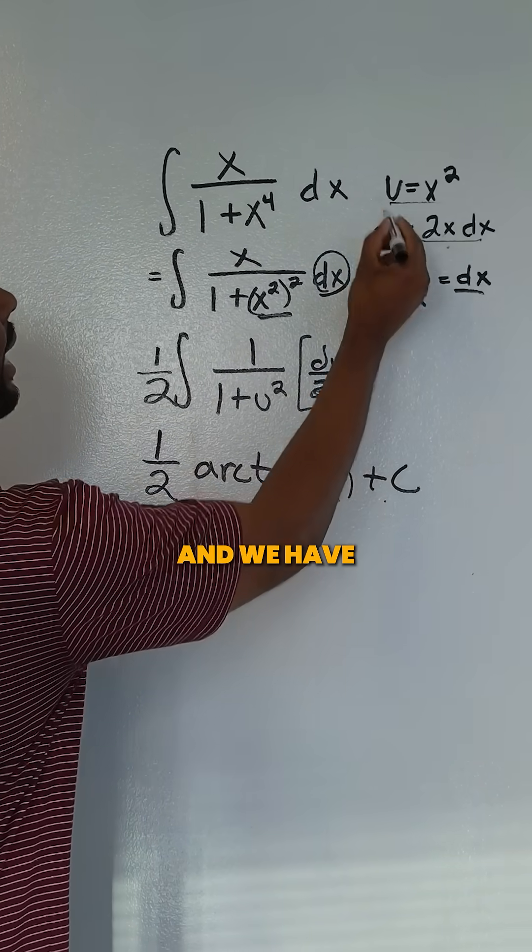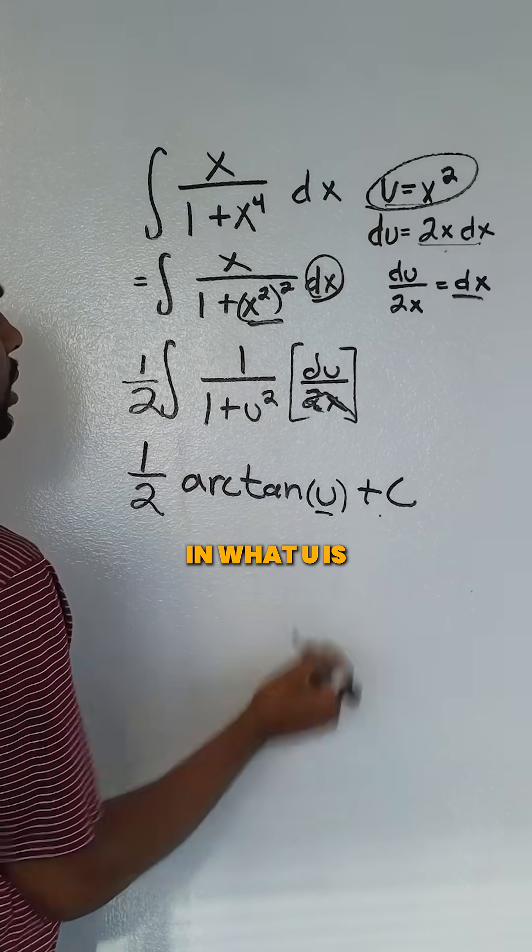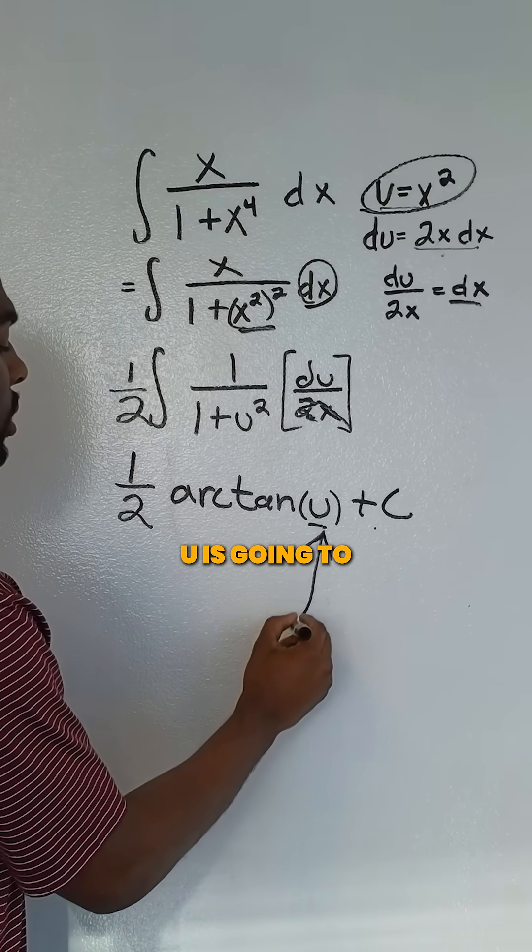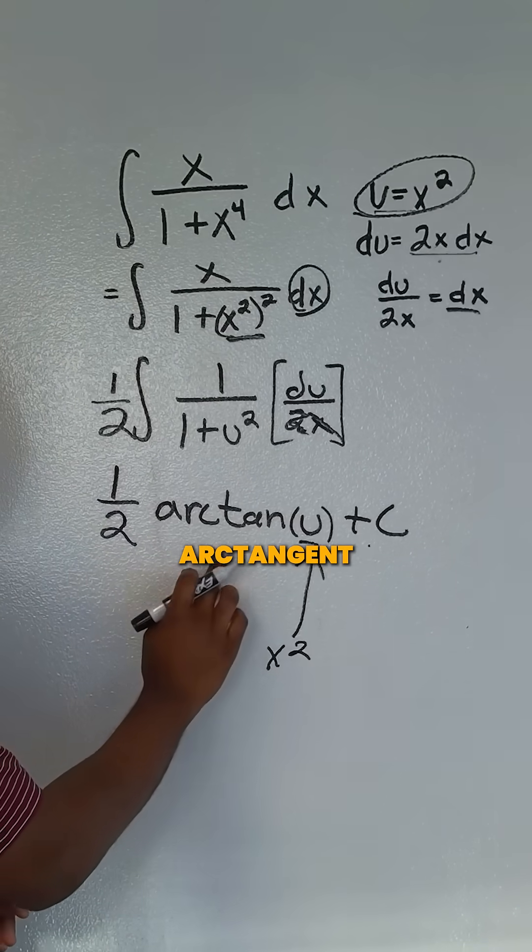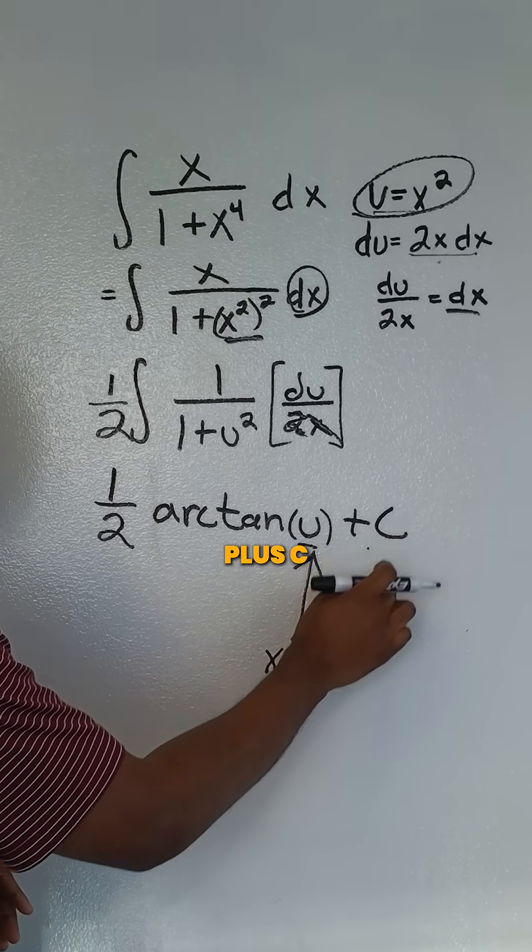Never forget your c, and we have to now substitute in what u is. We know our u is going to be x squared, so our final answer would be one half arctangent of x squared plus c.